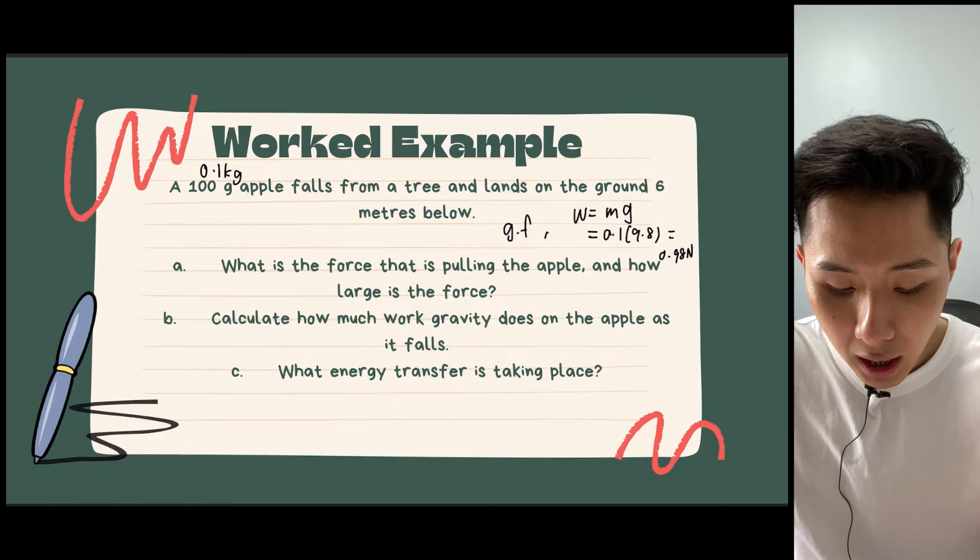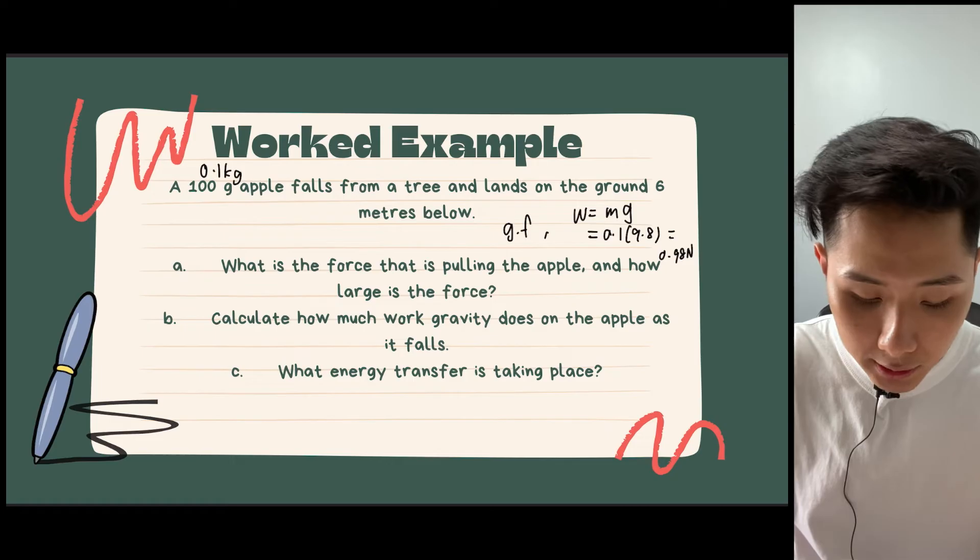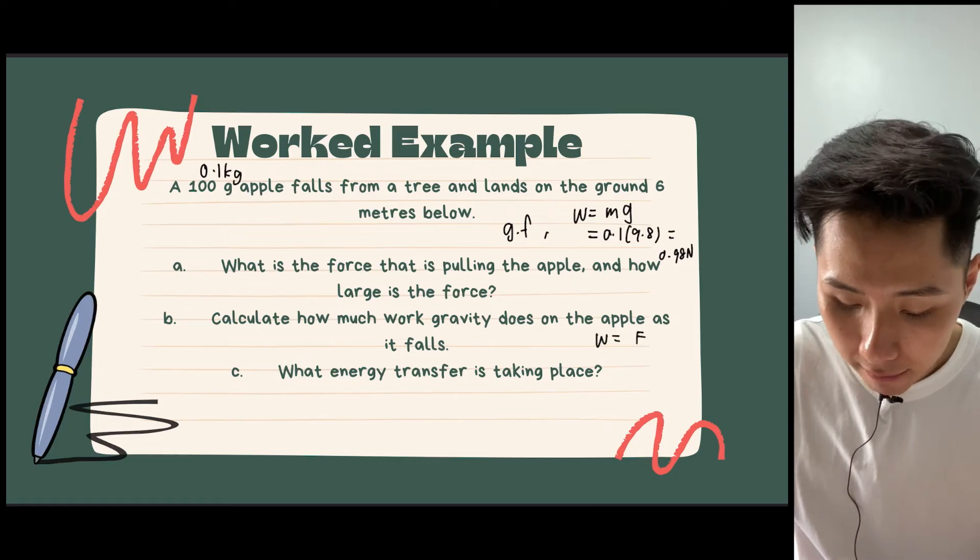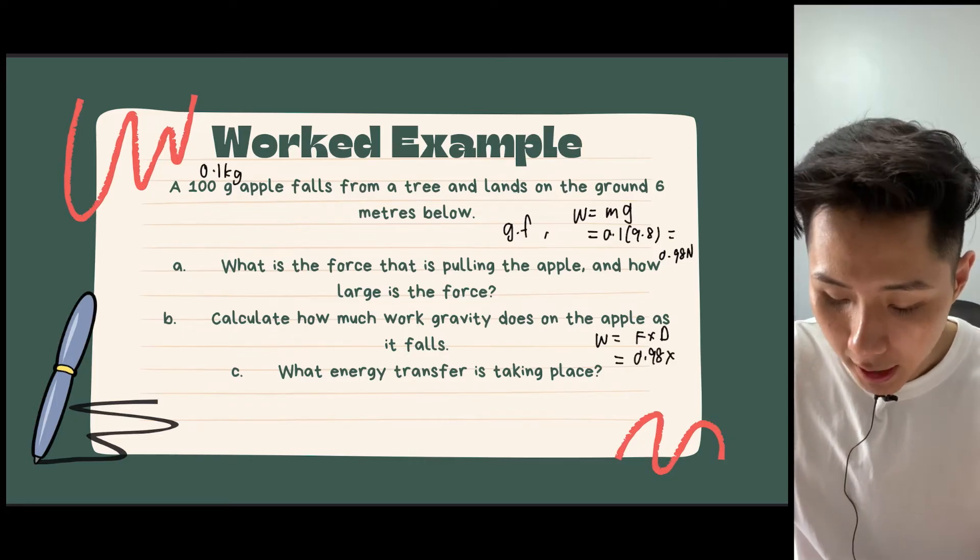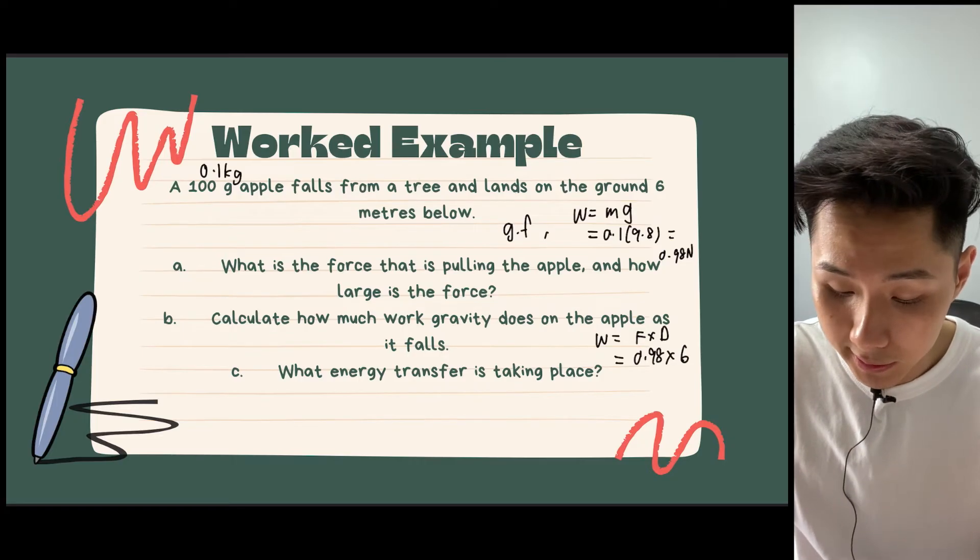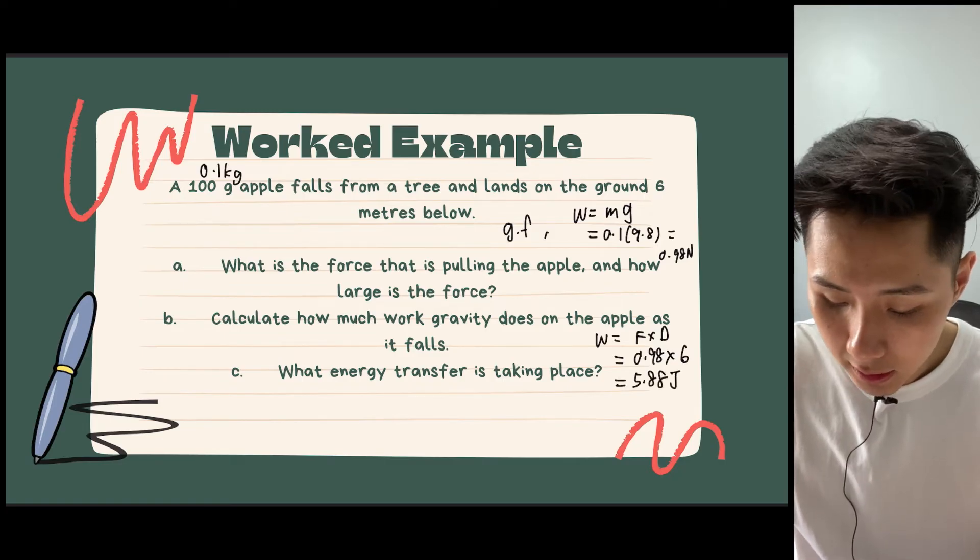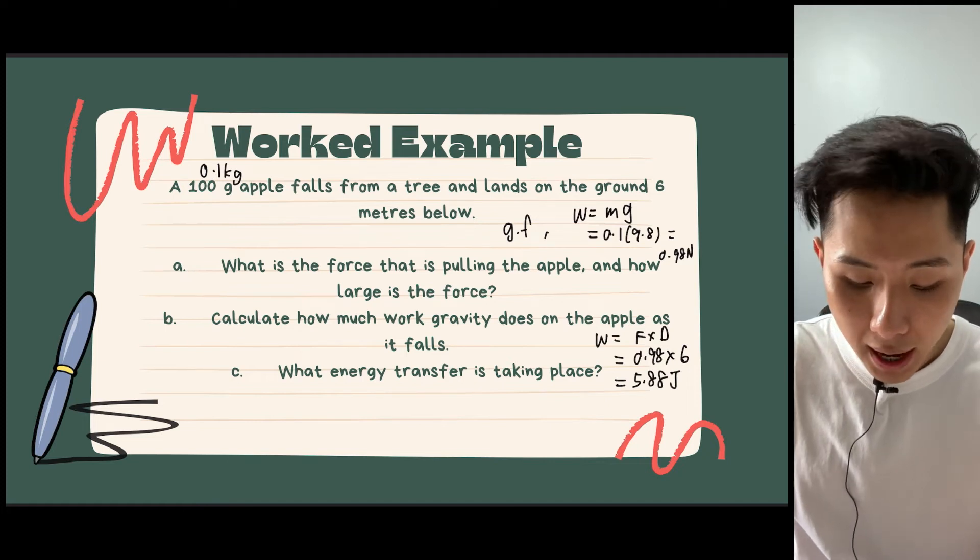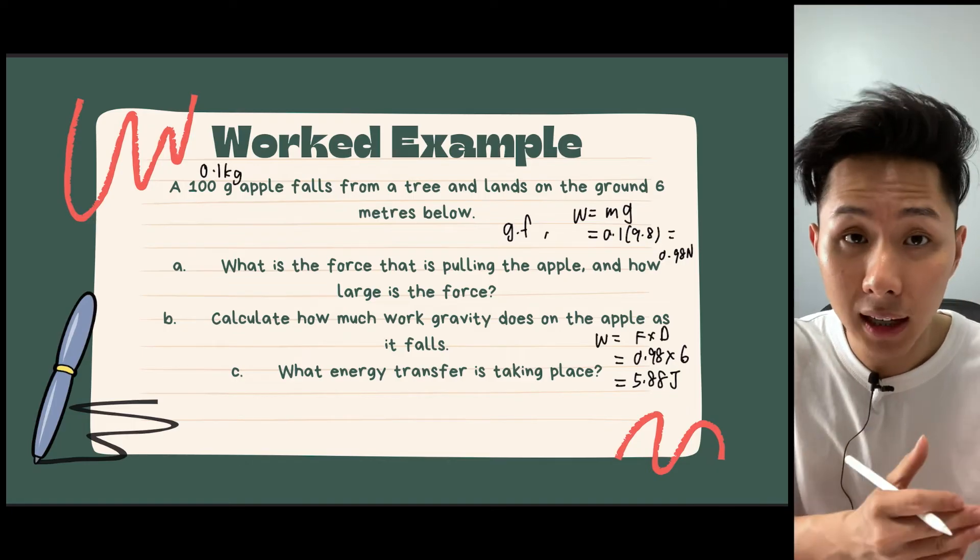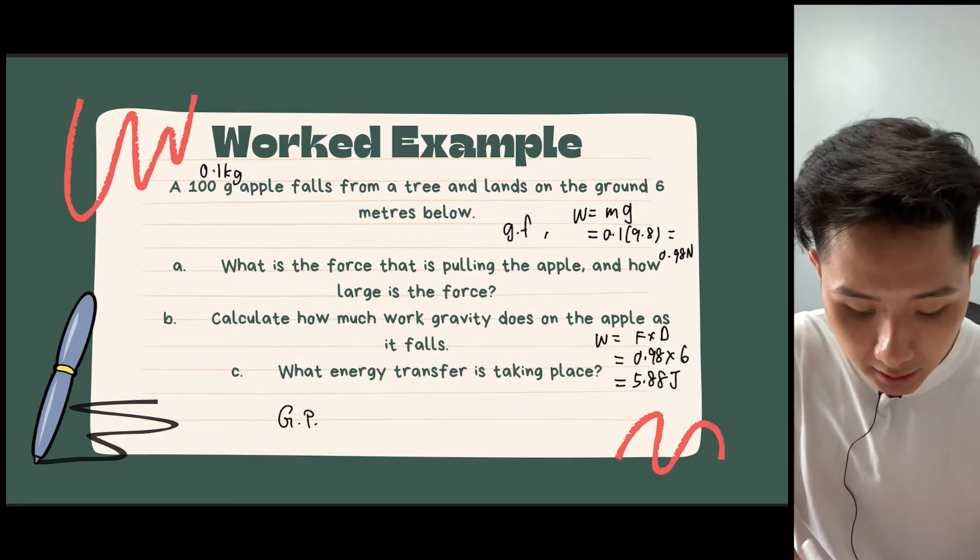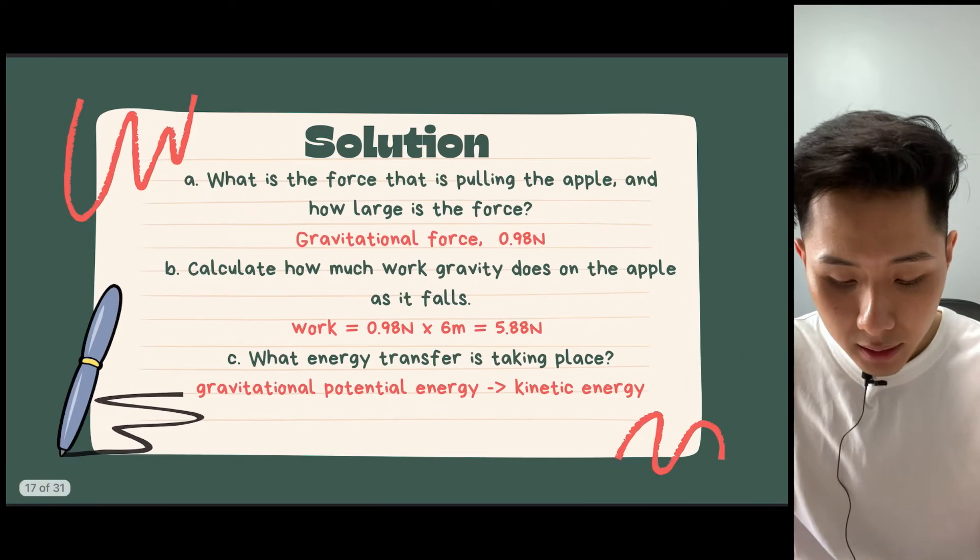Question B. Calculate how much work gravity does on the apple as it falls. So we get work done equal to F times D. Because the force acting on the apple is 0.98 and the apple travels a distance of 6 meters, we multiply them together, we get 5.88 Joules. So that's the work done. What energy transfer is taking place? We know that initially when the apple is hanging on a tree, it has GPE. But as it falls, the energy is converted into kinetic energy. And that's the answers.